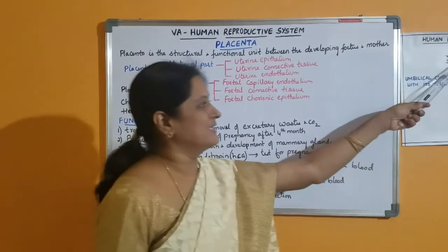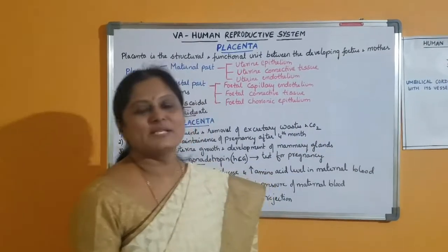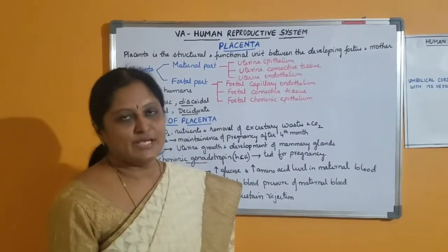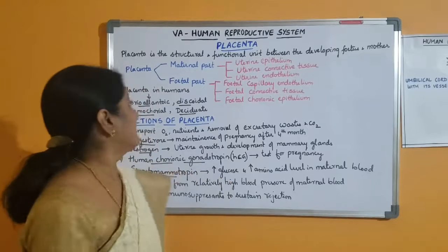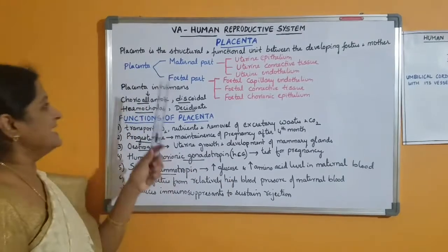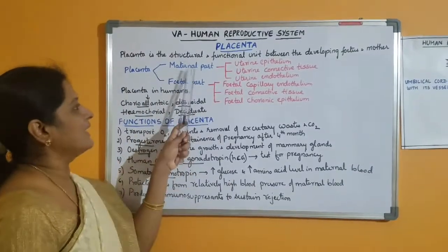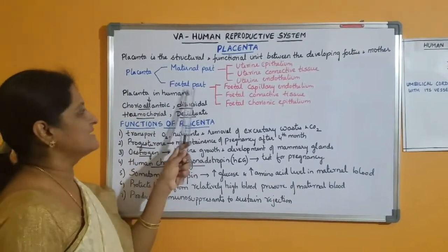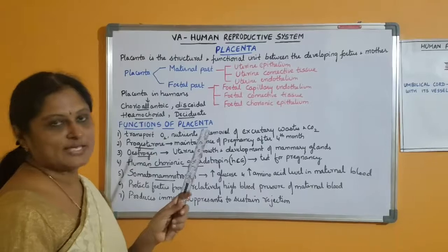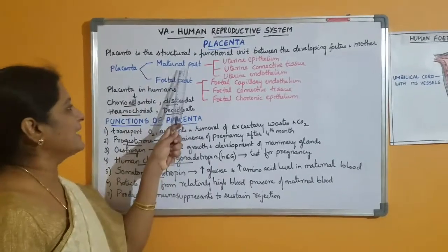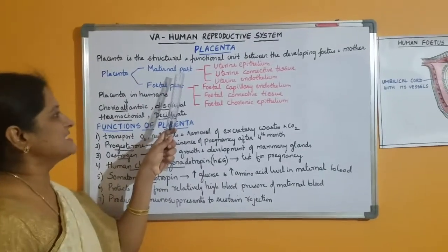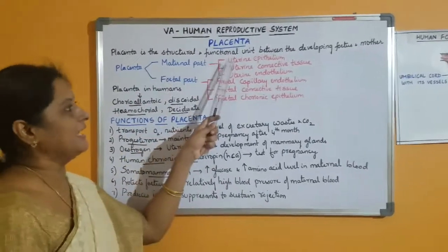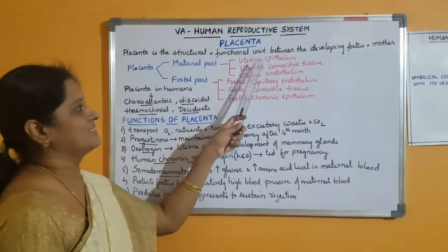The placenta prevents the mixing of maternal blood with the fetal blood. The placenta is made up of two components: one is called the maternal part and the second is called the fetal part. The maternal part is formed from the uterine endometrium and it has three layers.